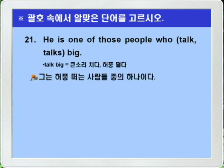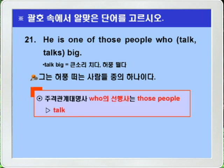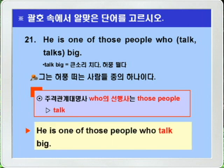Question 21: 'He is one of those people who talks/talk big.' 'Talk big' means to boast or brag. The key is finding the antecedent of the relative pronoun 'who.' Since the meaning is 'one of those people who brag,' the antecedent of 'who' is the plural noun 'those people,' so the plural verb 'talk' is the answer. Answer: He is one of those people who talk big.